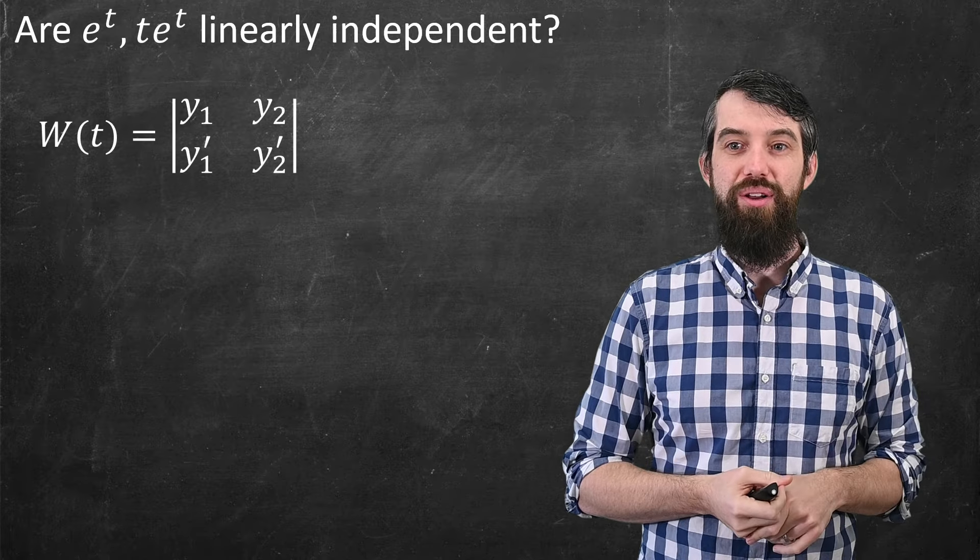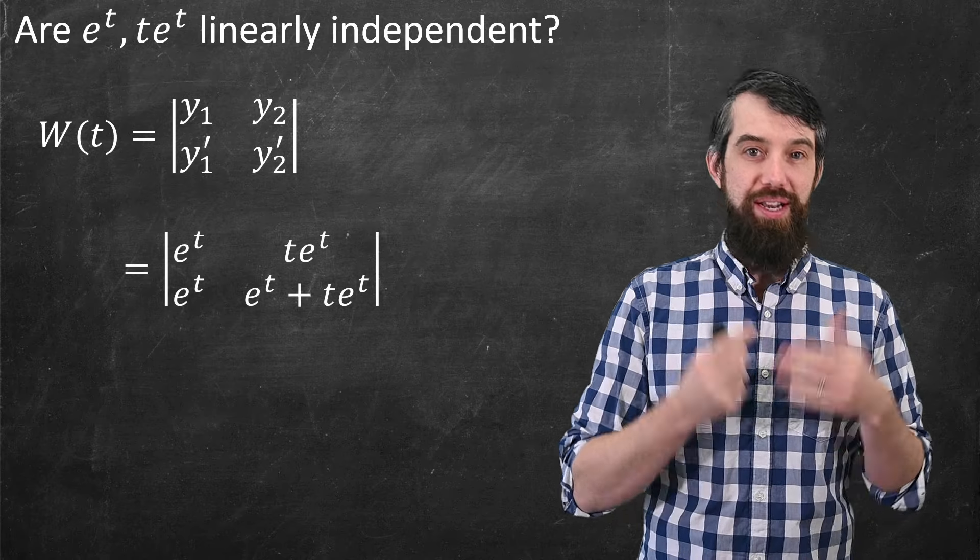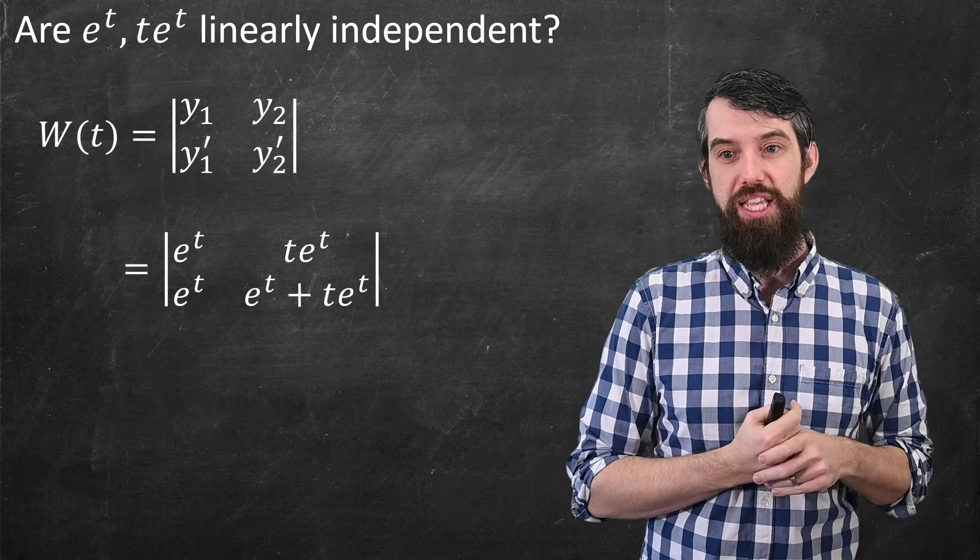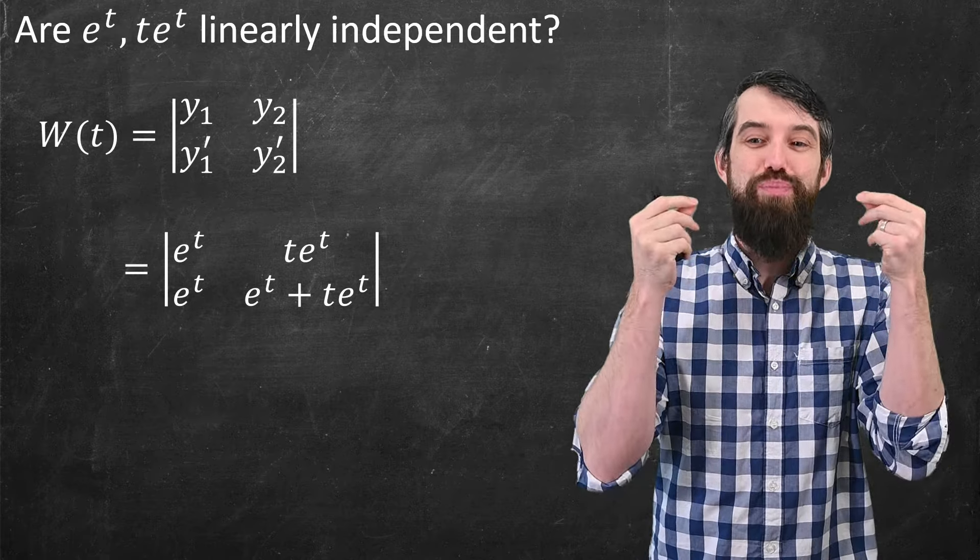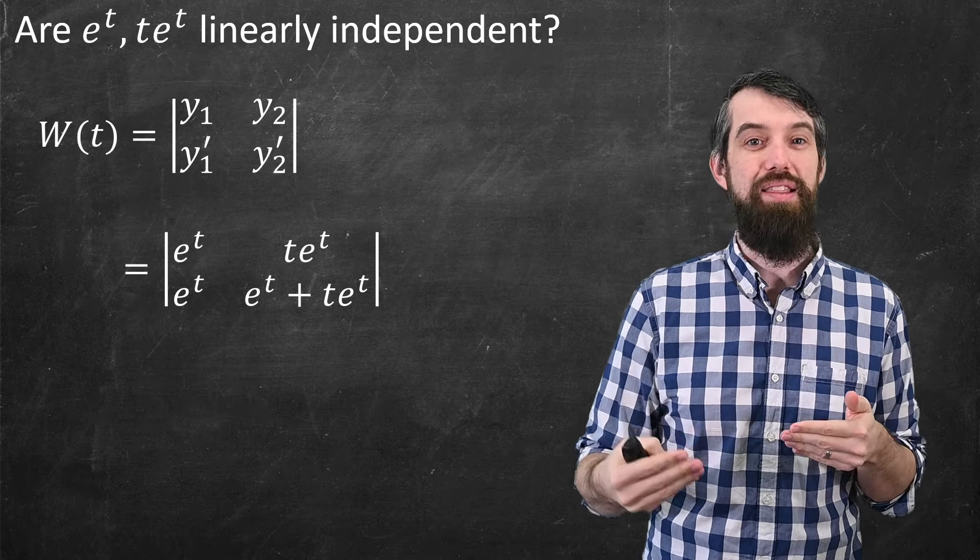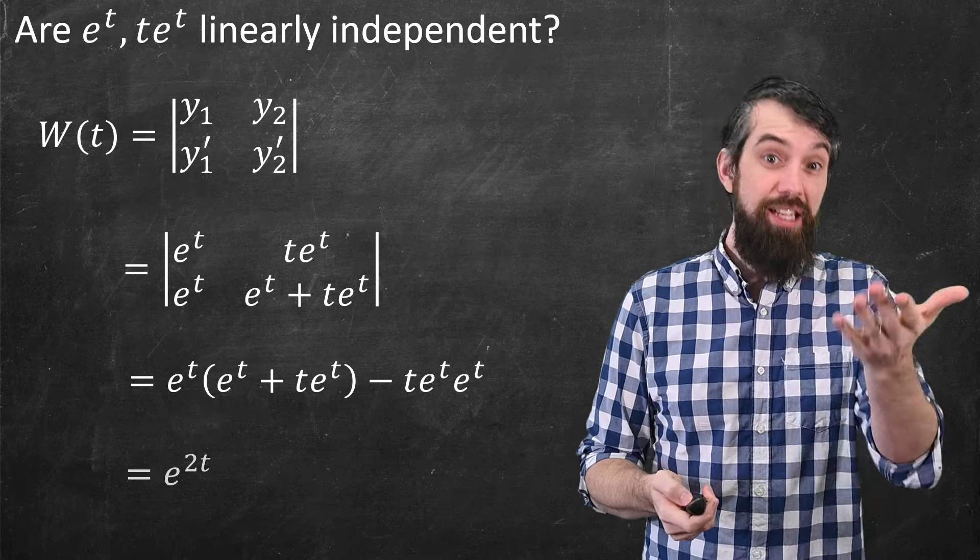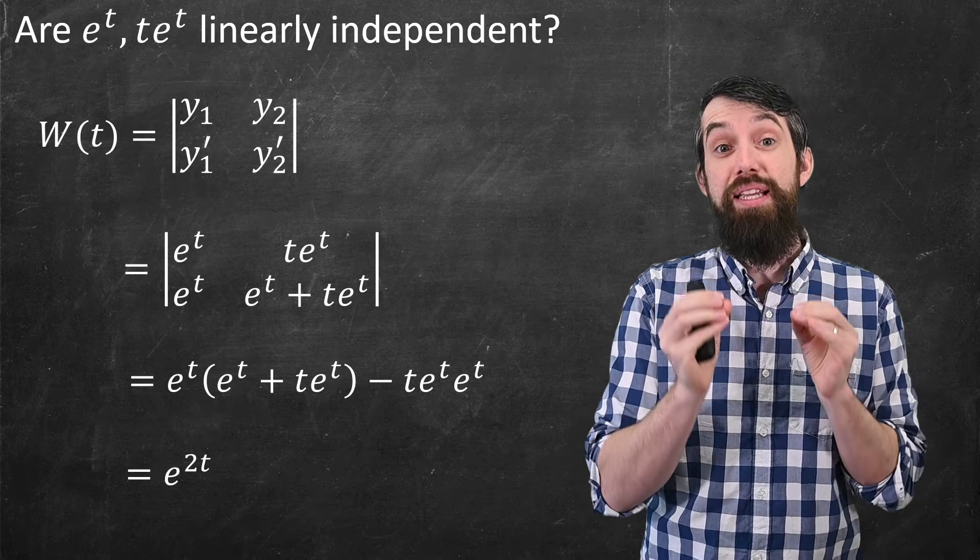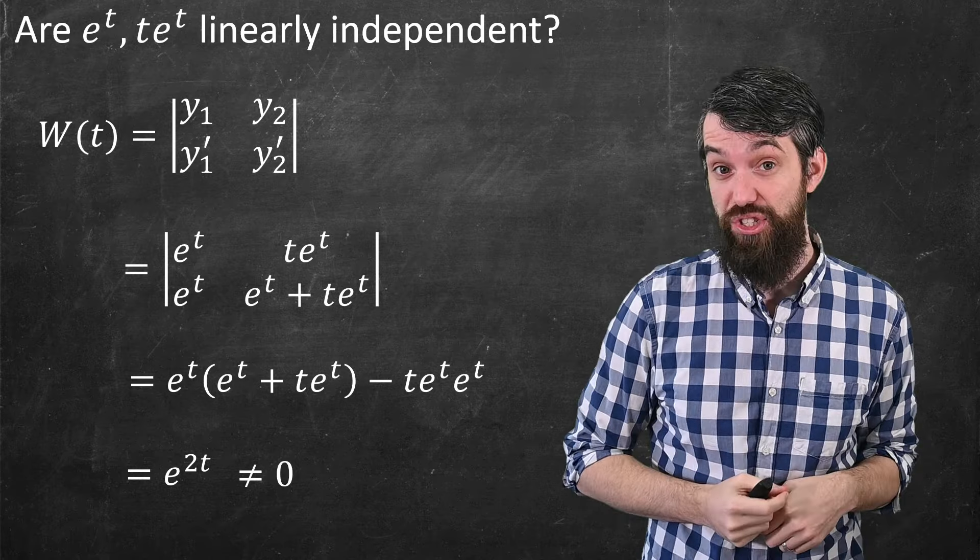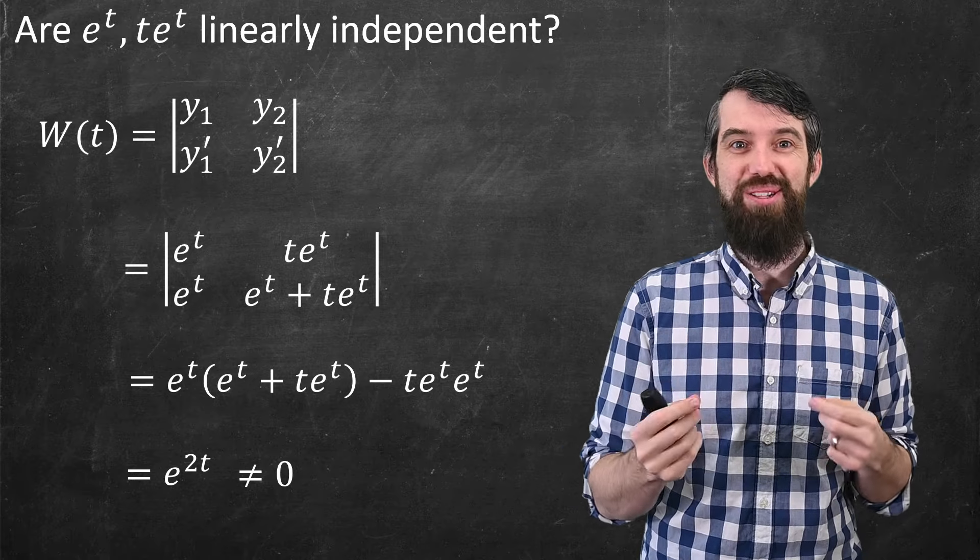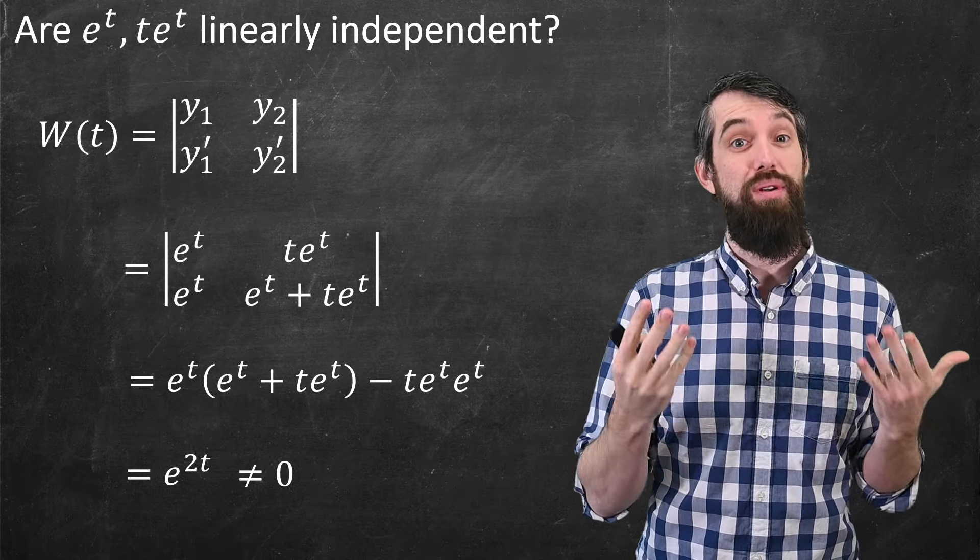So the Wronskian is this determinant—it's a 2×2 matrix. For y₁, I'll put in eᵗ and its derivative, which is eᵗ. For y₂, I'll put in t·eᵗ, and its derivative, which by the product rule is eᵗ + t·eᵗ. I can take that determinant. I'm going to get some messy expression, and it cleans up and just becomes e²ᵗ. And here's the point: e²ᵗ is actually never zero. It's not even non-zero at one spot—it's never zero. And since it's never zero, these two functions are linearly independent.